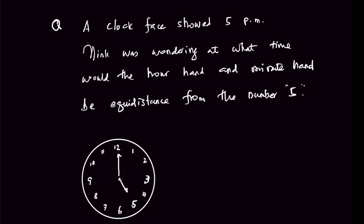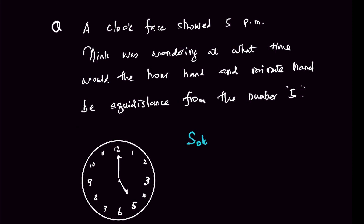A clock face shows 5pm. Mink was wondering at what time would the hour hand and the minute hand be equidistant from the number 5? We always convert the clock face problem to one of speed, which means the minute hand travels one full round while the hour hand has traveled only 1/12 of a round. We want to find the number of minutes the hour hand has traveled before the minute hand and the hour hand are at the same angle from the number 5.